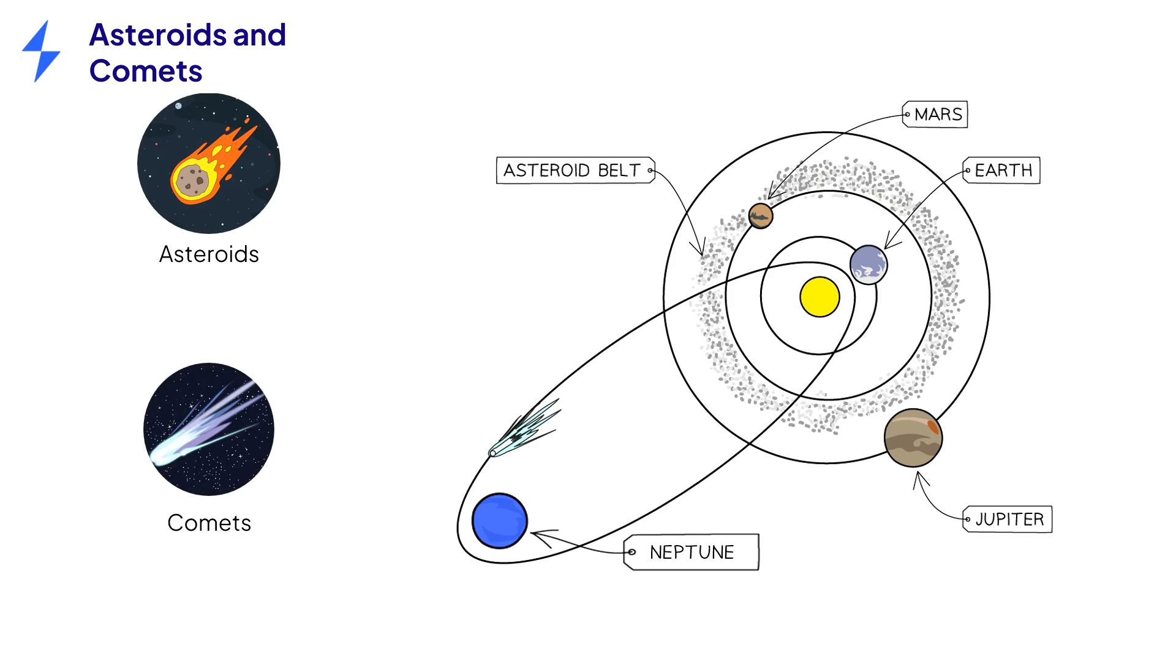Asteroids and comets are both small objects that orbit the sun. Small in this context means that they aren't quite big enough to become spherical, like planets or dwarf planets. Asteroids are made from rock, they are found in the asteroid belt between Mars and Jupiter, and they orbit the sun in a circular path.